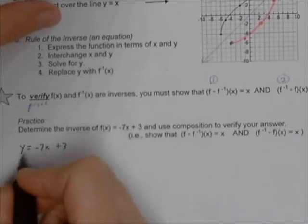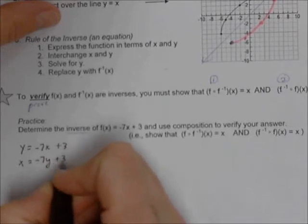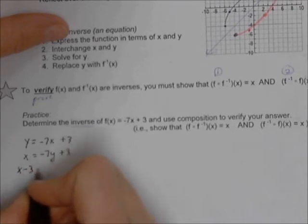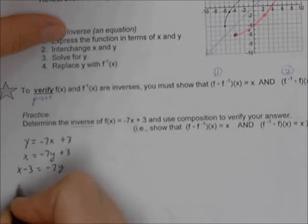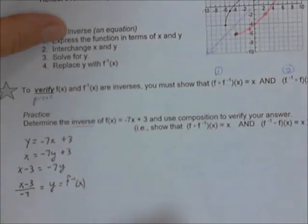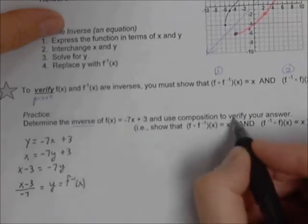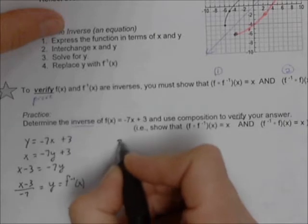To find the inverse, you switch x and y: x equals negative 7y plus 3, and then you solve for y. Subtract 3 from each side, then divide both sides by negative 7. So x minus 3 divided by negative 7 equals y, which is the inverse of the original function. That's how to find the inverse, and now we have to prove or verify that this is actually the inverse.